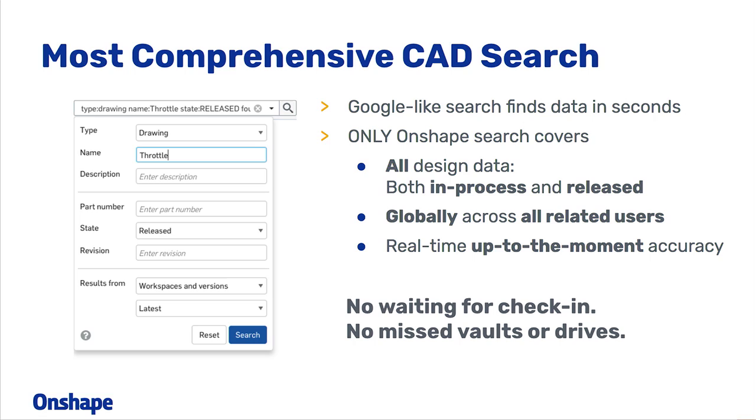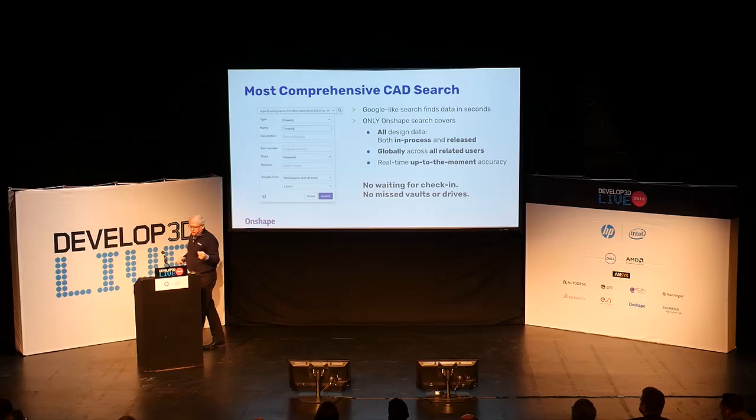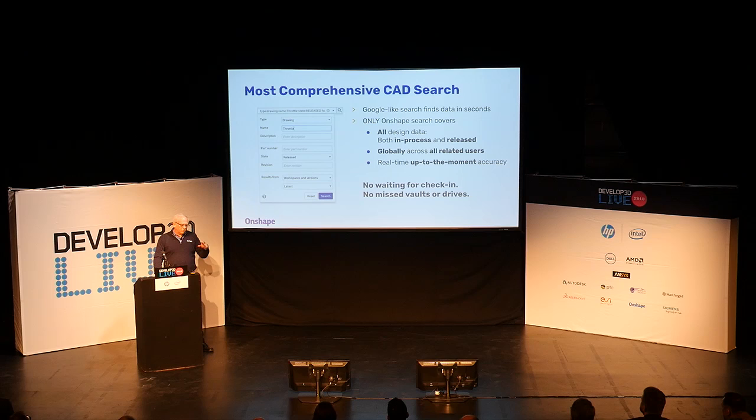First, it starts with search. Everyone uses search tools, but we believe only we have a comprehensive search tool that covers not just data in the vault, not just data on your disk, but all data in your design world — in process or released — not just for you, but all the colleagues that you've invited into your project. If you're working with someone and they just created a new subassembly 30 seconds ago in your shared workspace, you're going to see that show up in your search results immediately. No waiting for check-in. Now you have one integrated search tool — no more worrying about which drives or vaults you're covering.